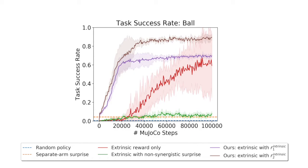The first takeaway is that using our synergistic intrinsic rewards boosts sample efficiency. This task is hard and requires coordination among the two arms, so separate arm surprise policies do not perform well.